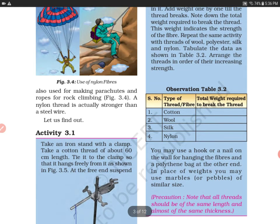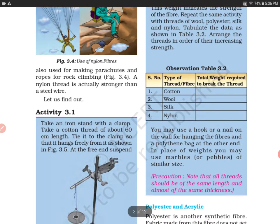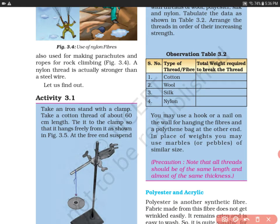When you finish with the cotton thread, repeat the same activity with threads of wool, polyester, silk, and nylon. Tabulate the data as shown in Table 3.2. Arrange the threads in order of their increasing strength.